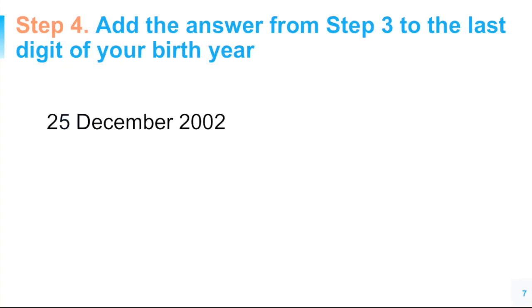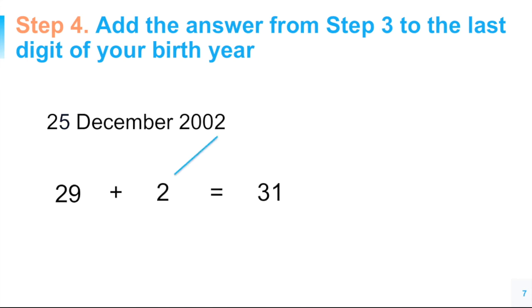Step 4: add the answer from step 3 to the last digit of your birth year. The last digit of 2002 is 2, so 29 plus 2 equals 31.